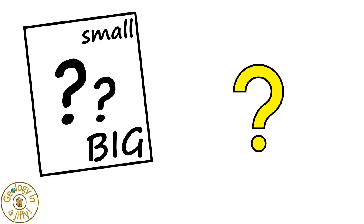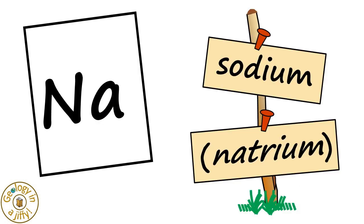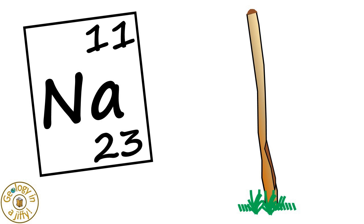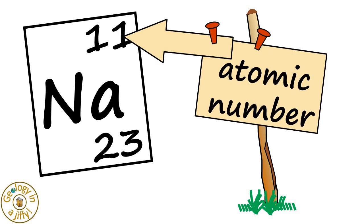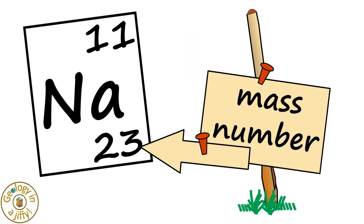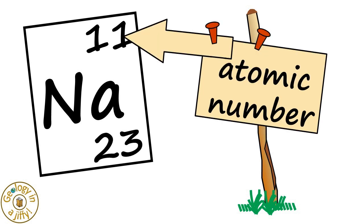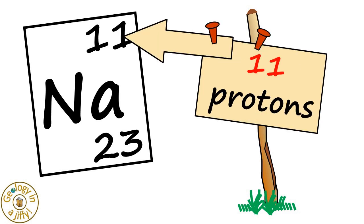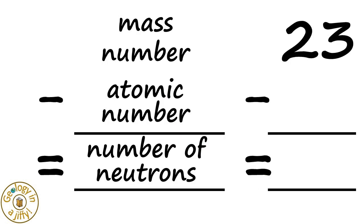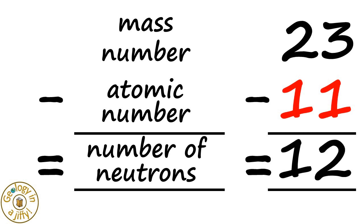Let's do another example. Sodium. We know the symbol is NA. The numbers are 11 and 23. The small number is 11. The large number is 23. Knowing the small number is the atomic number, there must be 11 positively charged protons in the nucleus. So the mass number, 23, subtracting the atomic number, 11, gives us 12 neutrons in the nucleus of sodium. Wow!